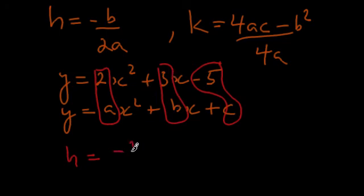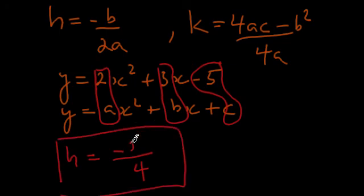So we have -3 over 2a, and our a value is 2, so 2 times 2 is 4. Right away we have the x-coordinate of our vertex: h = -3/4.